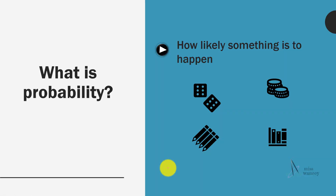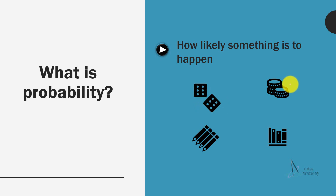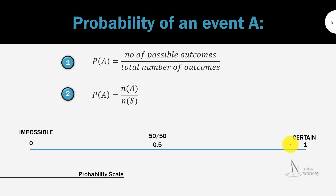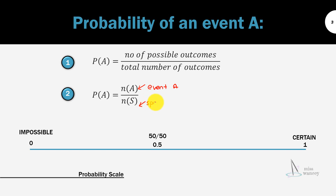Firstly, what is probability? Probability is how likely something is to happen. For example, we might want to calculate what is the probability of rolling two dice and getting both as six, or finding the probability of getting a head or a tail. The formula: probability of an event A is the number of possible outcomes divided by the total number of outcomes. Or P(A) = n(A) over n(S), where A is our event and S is the sample space listing all possible outcomes.